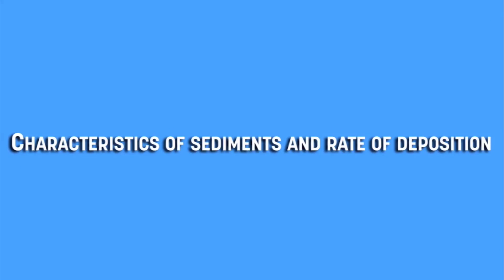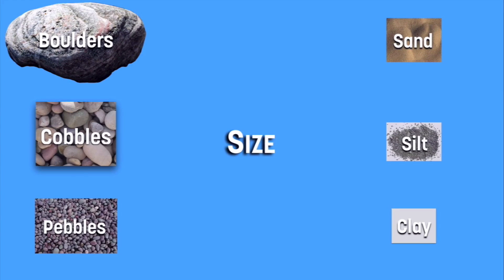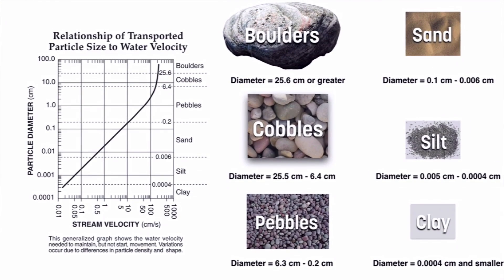Let's talk about what those characteristics are and how they will affect the rate of deposition. There are six different sizes of sediments, and those six different sediments are listed in your Earth Science reference tables on page six. That chart clearly identifies all six different sediments. On the stream velocity versus particle diameter chart, we have a curved line that demonstrates the velocity required to carry certain particles or sediments. The dotted lines that run horizontally show the cutoffs for each size of sediment.